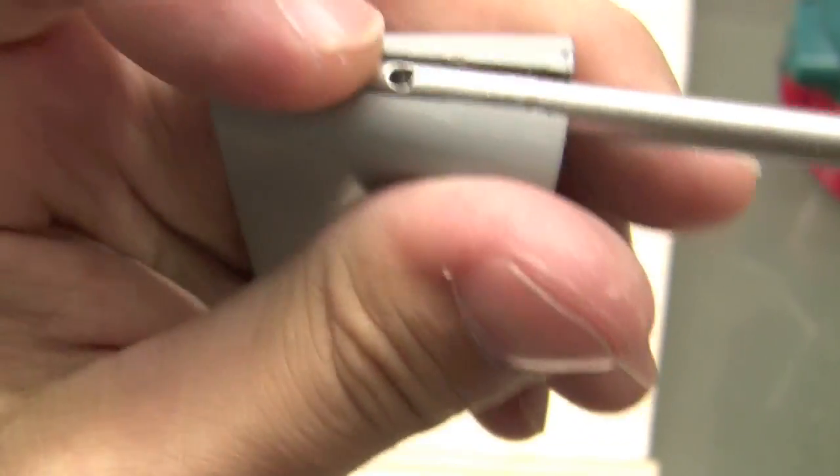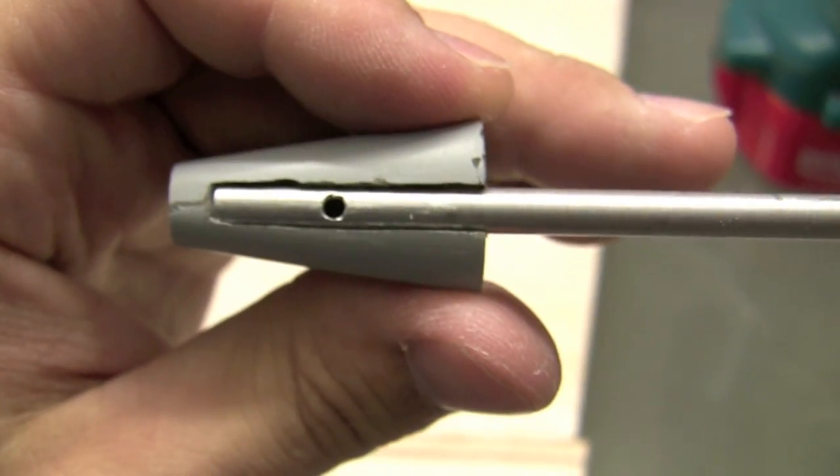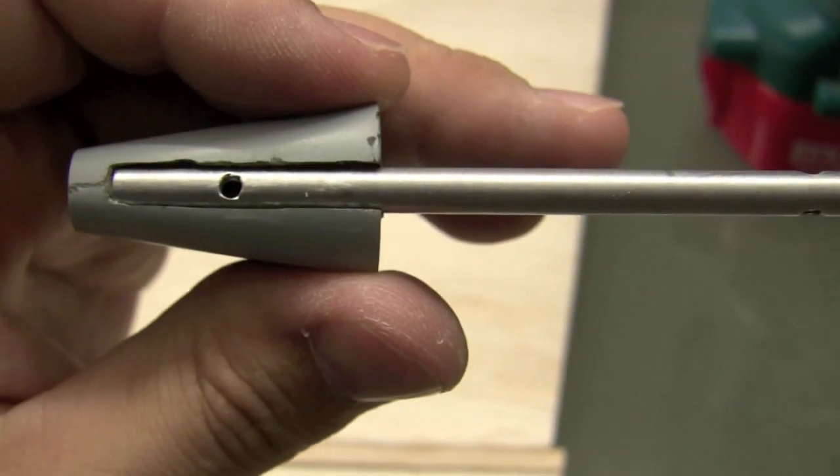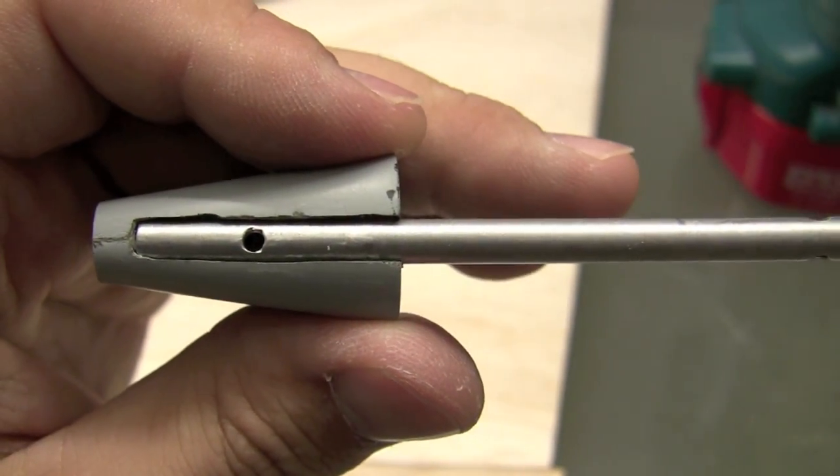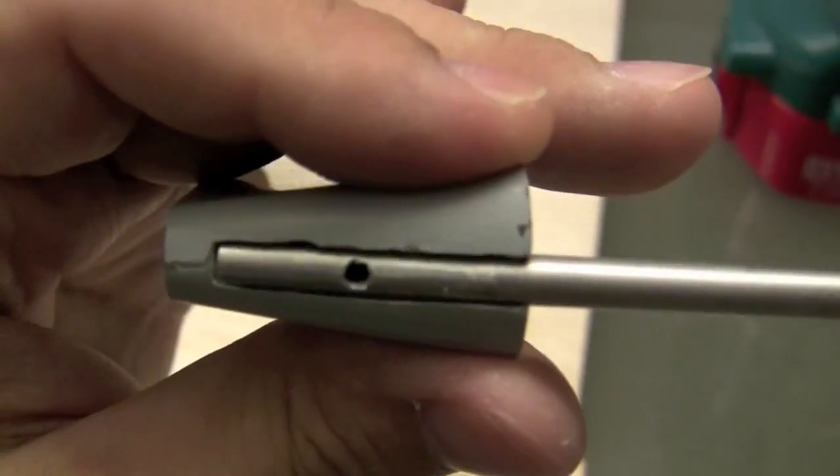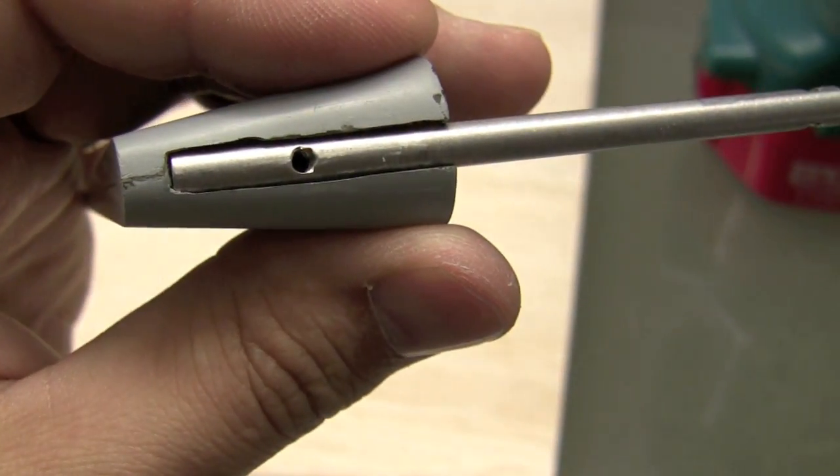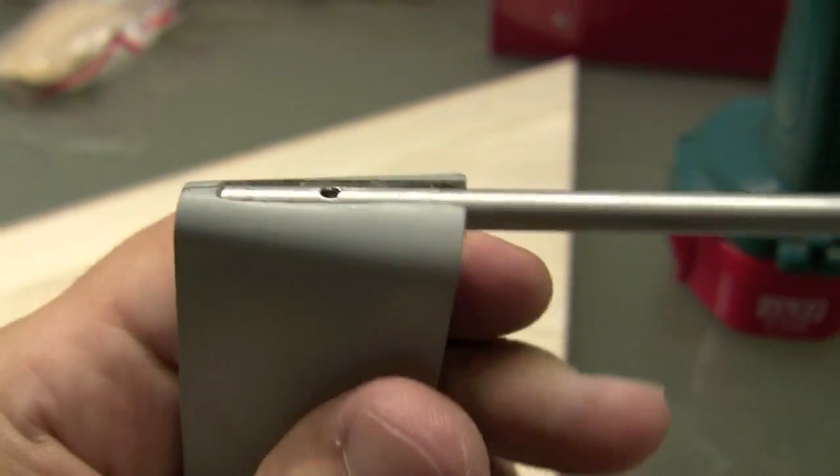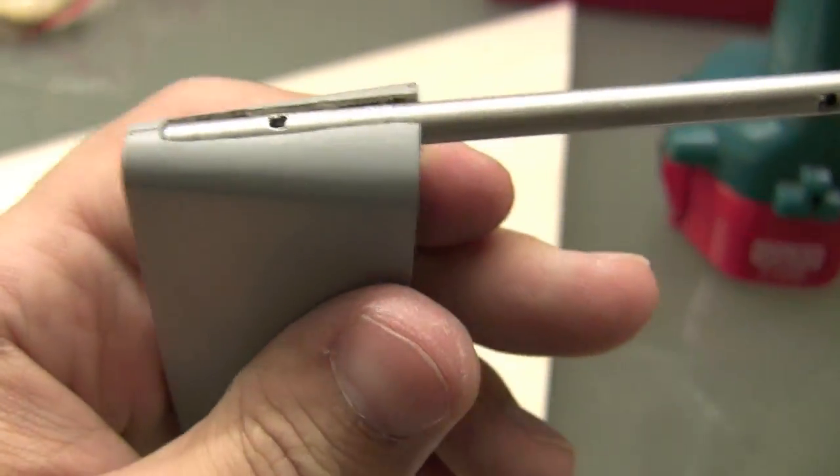All right, so where that hole is, we're actually going to take a number 45 drill bit and just drill straight in there. And you want to be real careful not to drill out the threads right there. So anyways, we're going to go ahead and do that and I'll show you the next step.